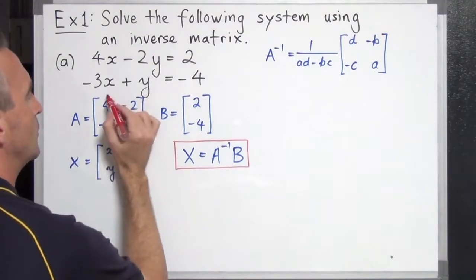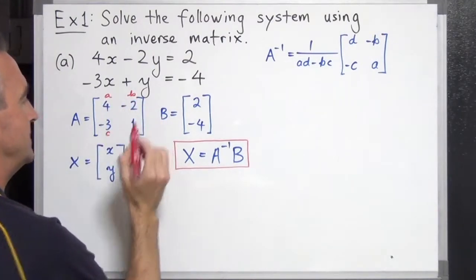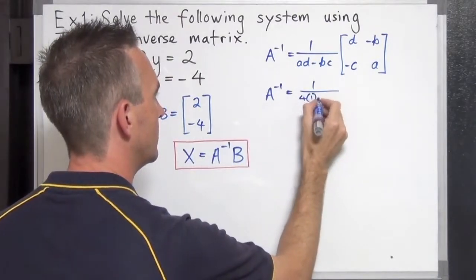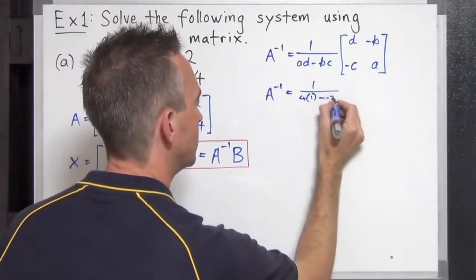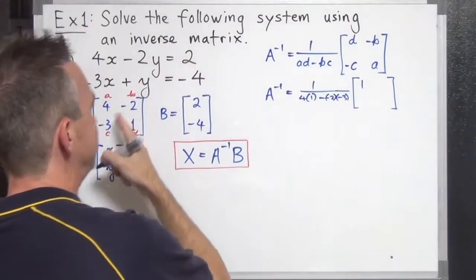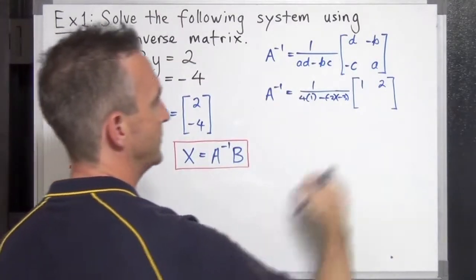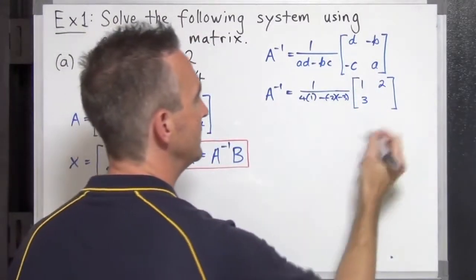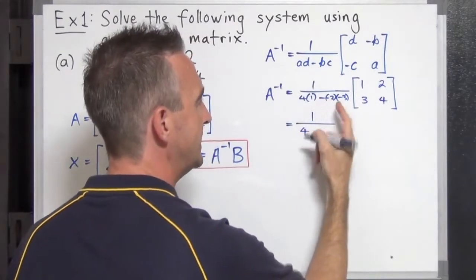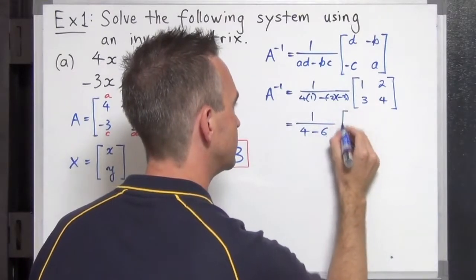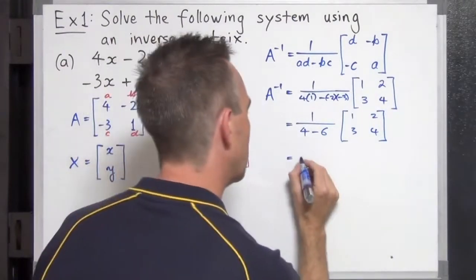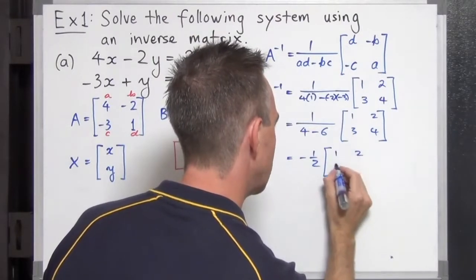What are A, B, C, and D? We look at our original matrix: A, B, C, and D. When we put these corresponding values in, we get 1 over A times D — 4 times 1 — minus B times C — negative 2 times negative 3. Inside the matrix: D is 1, negative B is positive 2, negative C is positive 3, and A is 4. Evaluating: 4 times 1 is 4, and with three negatives we get negative 6. That gives us negative one half at the front, with 1, 2, 3, 4 inside the matrix.